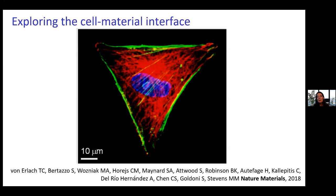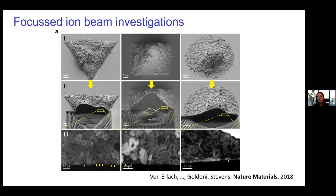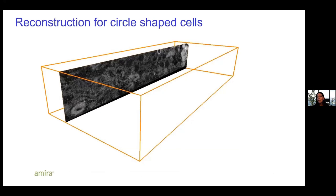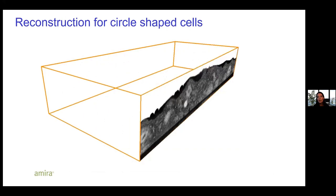What we wanted to do was pattern single stem cells in different shapes and study the interface between the cell and the material in a way that hadn't been done before — really zoom in to the nanoscale level of detail. We patterned our cells and developed imaging protocols that enabled us to do that imaging whilst preserving the ultrastructure resolution of the cell, and developed algorithms to resolve and visualize that interface.